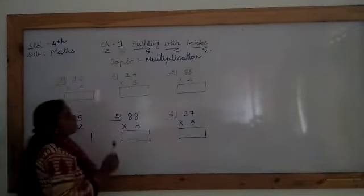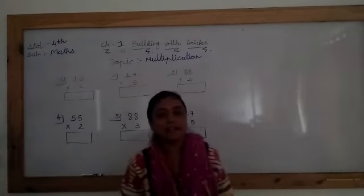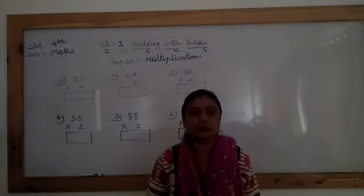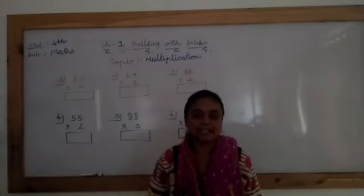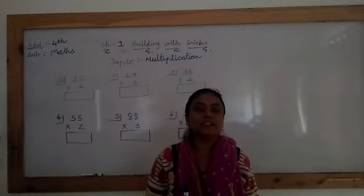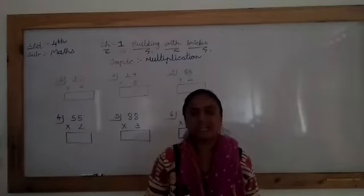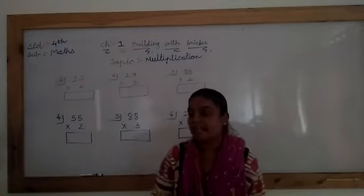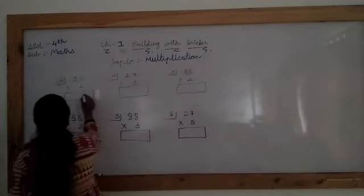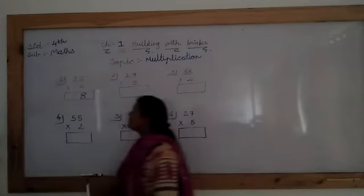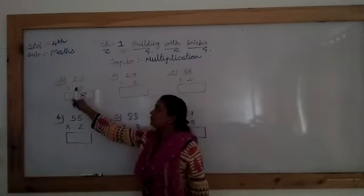2 fours up. So, can we students now? 2 ones up? Yes, very good, 2. 2 twos up? Yes, very good, 4. 2 threes up? Yes, 6. And 2 fours up? Yes, 8. So here, 2 fours up, 8.